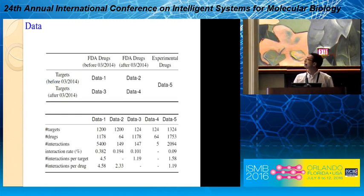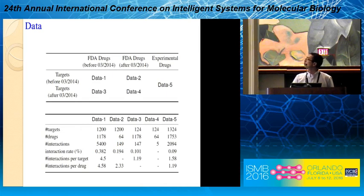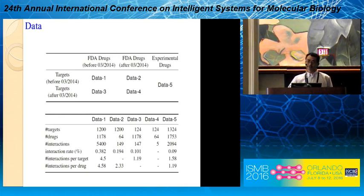We get the data from the DrugBank database, divided into five datasets. For dataset one, we get DrugBank data that appeared before March 2014. Datasets two and three are simulated as the new drug and new target datasets. For dataset five, it consists of experimental drugs that are not yet officially approved. We also have some summary information for these datasets.